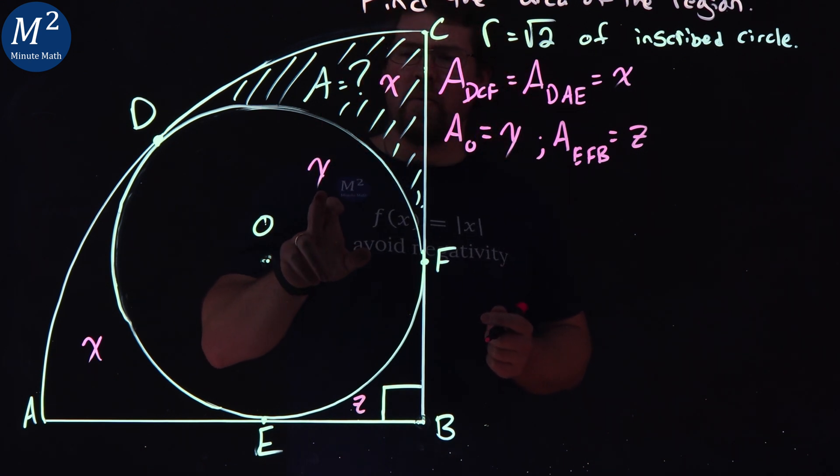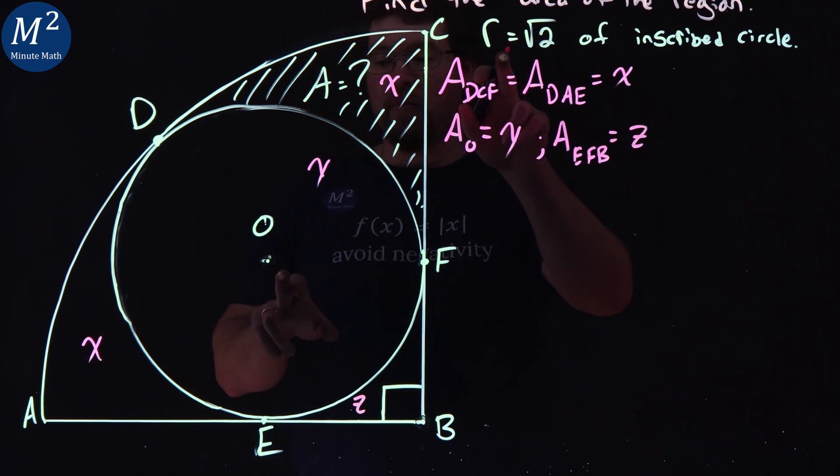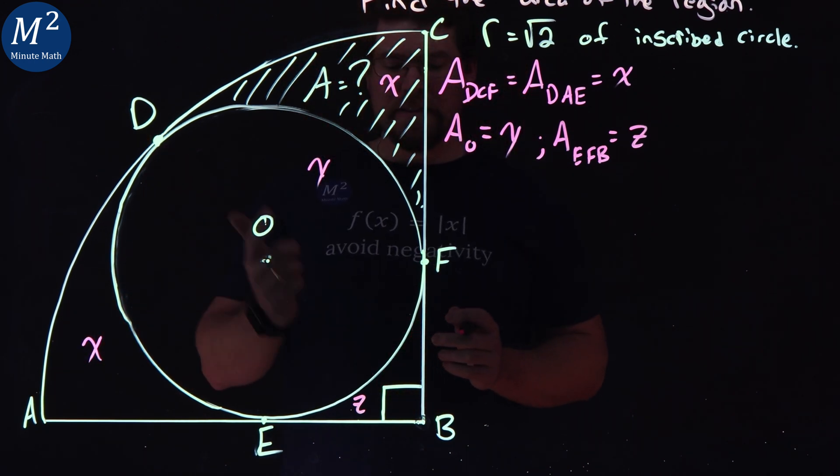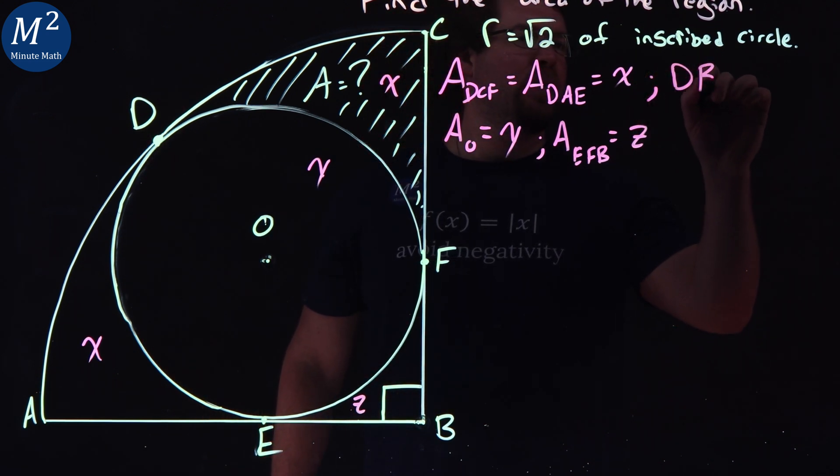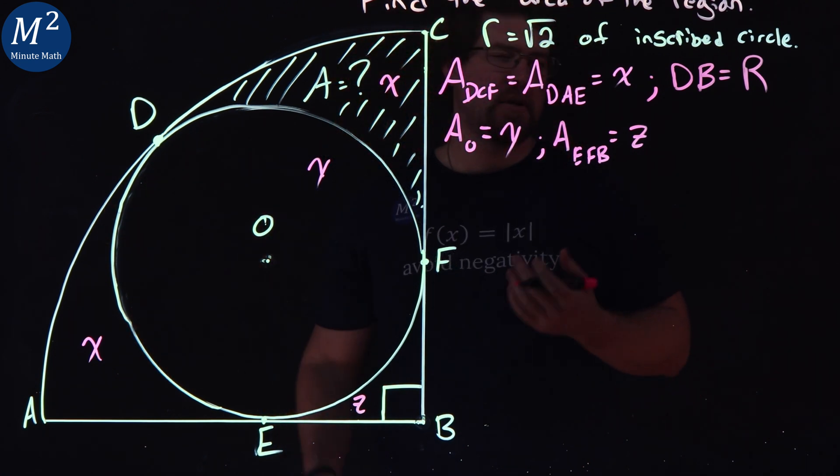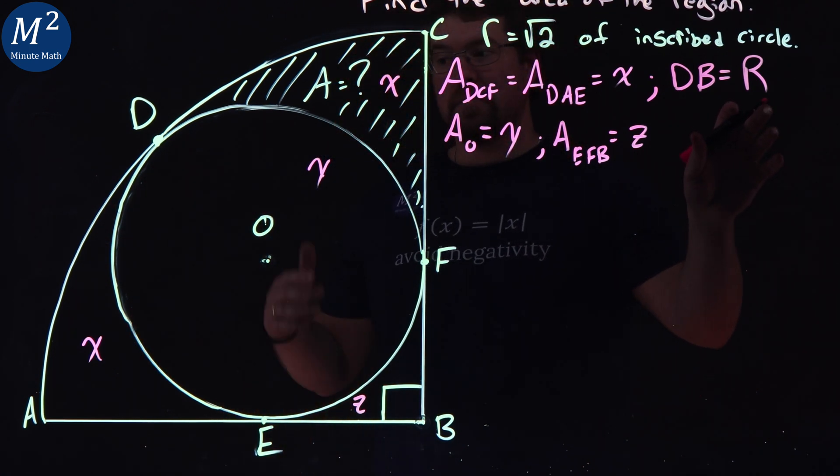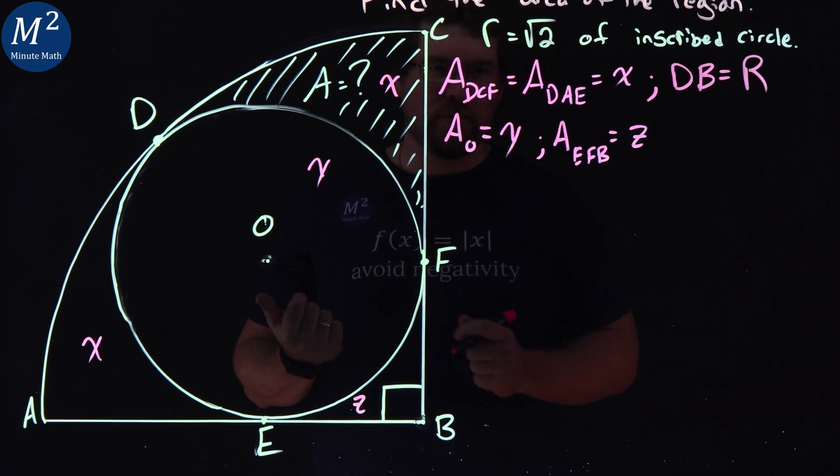Now, one thing with Y, well, Y represents the area of circle O, which we call little r is our radius. Let's call the radius DB of our big circle, let's call that big R. So we have a reference of our big circle.